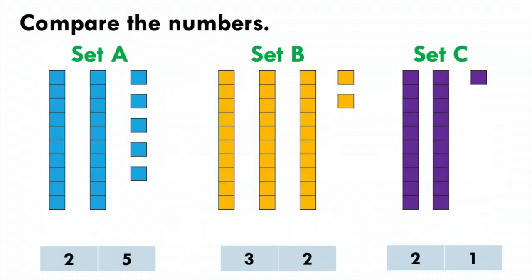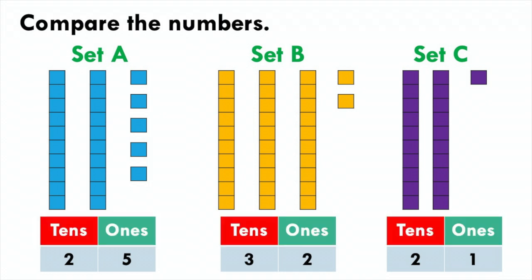Finally, let us compare 3 numbers. Set A has 25, set B has 32, and set C has 21 cubes. I am going to split these numbers into tens and ones: 25 is 2 tens and 5 ones, 32 is 3 tens and 2 ones, and 21 is 2 tens and 1 one. Same as when you compare 2 numbers, when I want to compare 3 numbers I look at the tens place first.